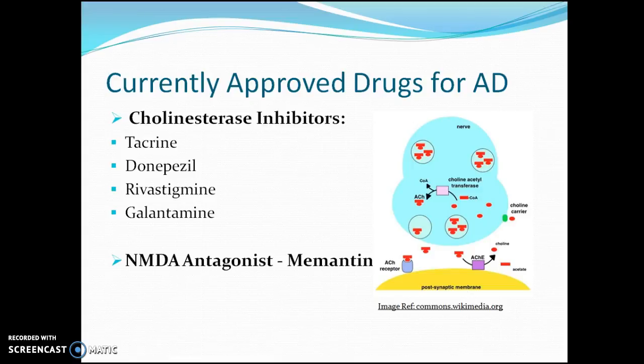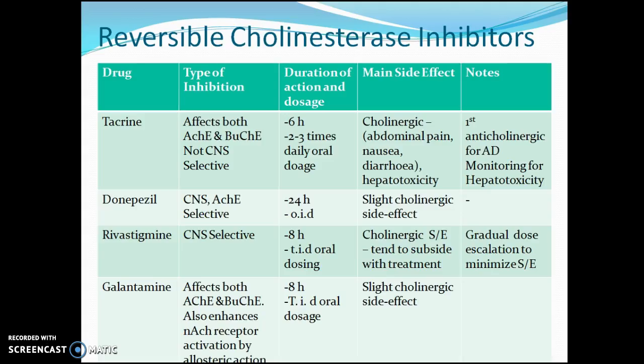The second drug category is the NMDA antagonist, which works to prevent excitotoxicity. The four reversible cholinesterase inhibitors are compared on the basis of type of inhibition, duration of action, dosage, main side effects, and extra notes for certain special drugs.